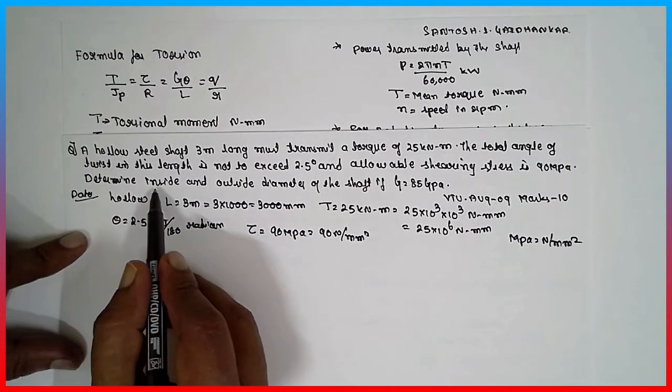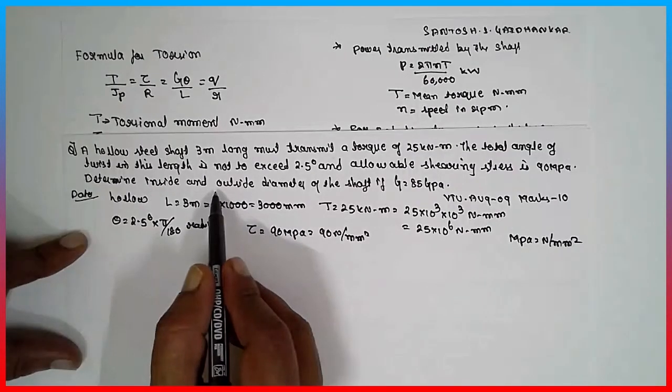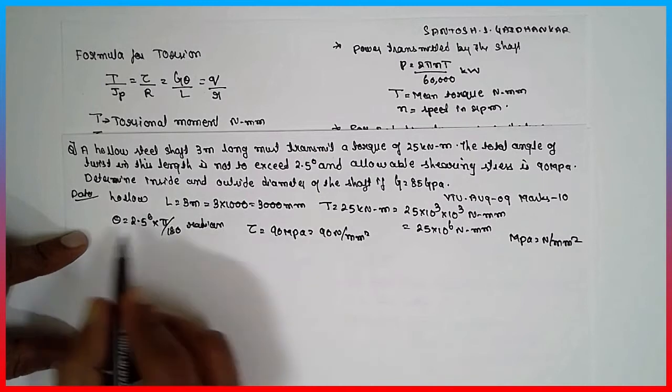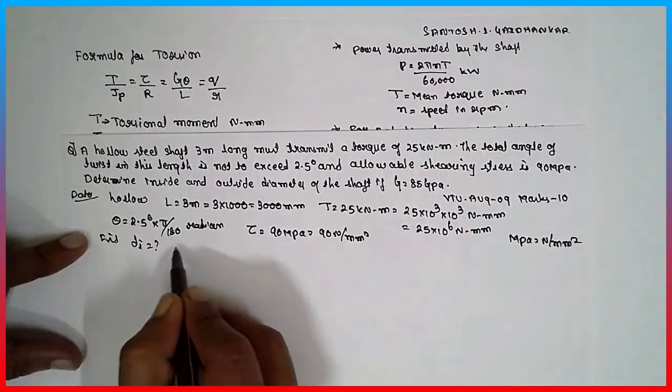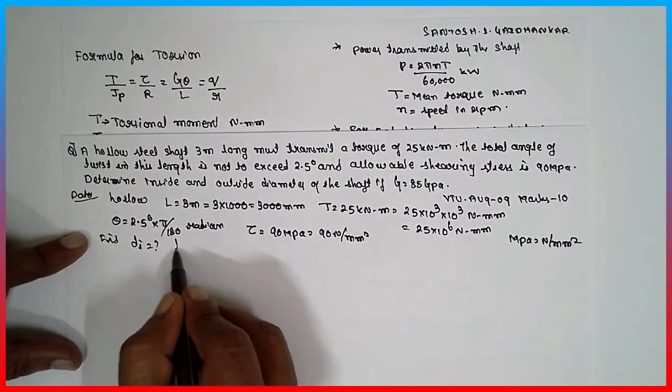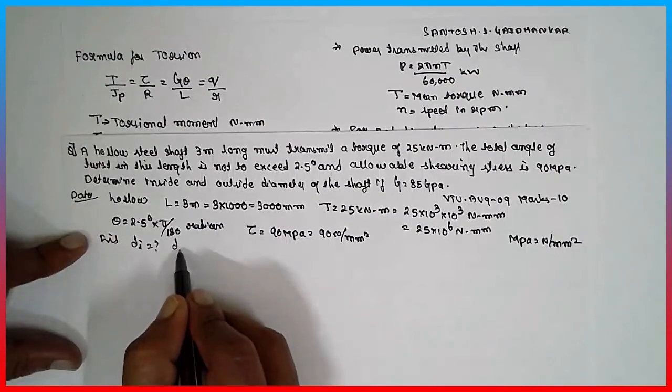Determine inside and outside diameter of the shaft. We have to find out D_i and D naught, or outer diameter.